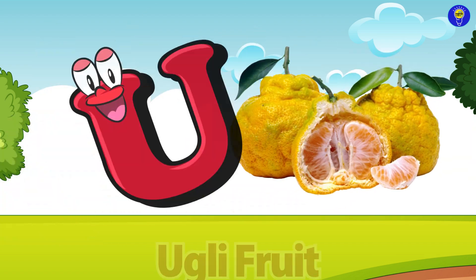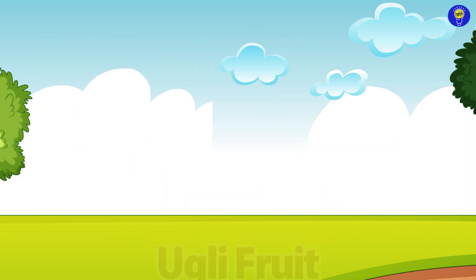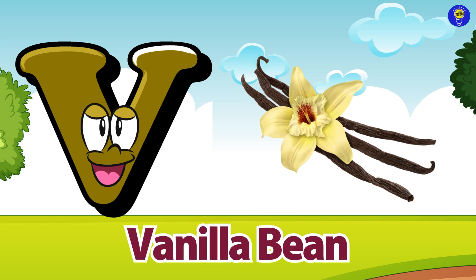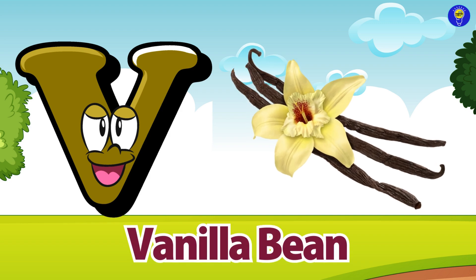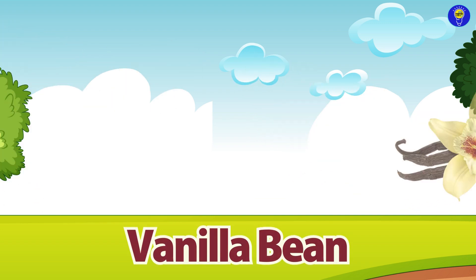U is for ugly fruit. Uh, uh, ugly fruit. V is for vanilla beans. Vh, vh, vanilla beans.